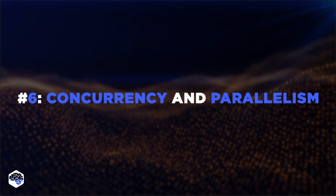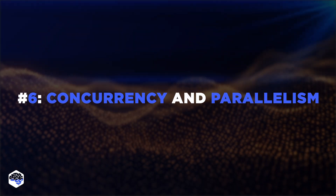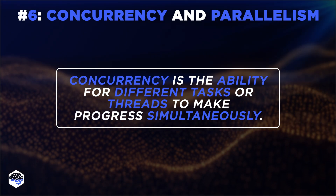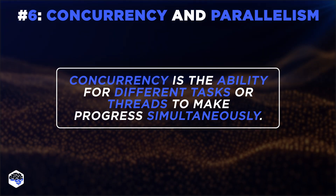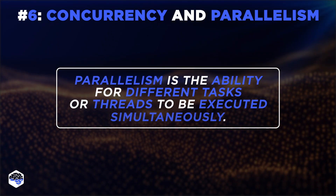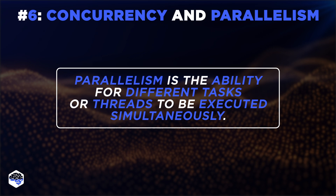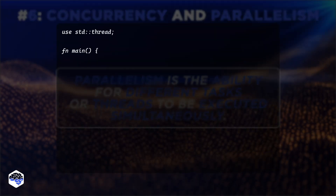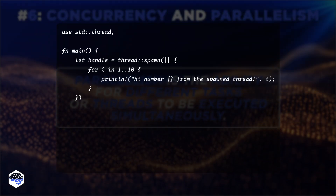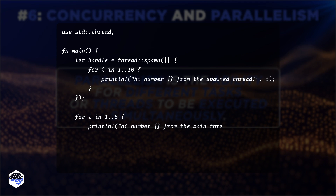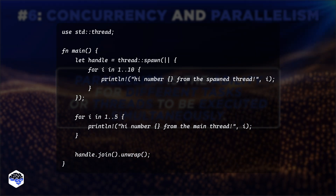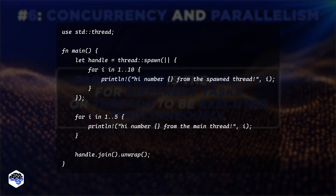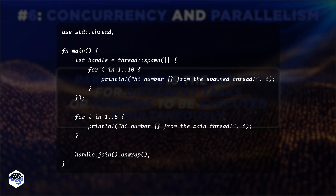Let me tell you about concurrency and parallelism in Rust. Thanks to Rust's ownership and borrowing system, writing concurrent and parallel code in Rust is safer and easier compared to many other languages, making it a great choice for building scalable and performant systems. This Rust code demonstrates concurrent execution using threads — it spawns a new thread to print numbers from 1 to 9, while the main thread prints numbers from 1 to 4, showcasing parallelism in program execution.